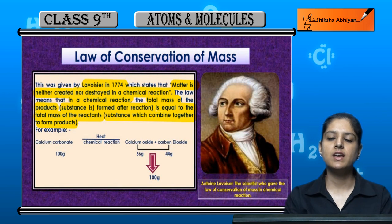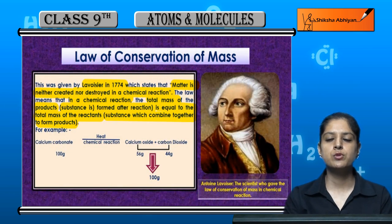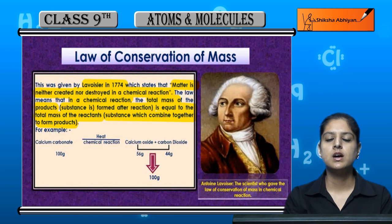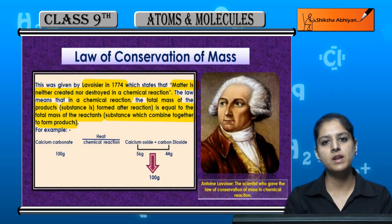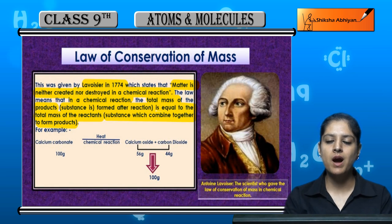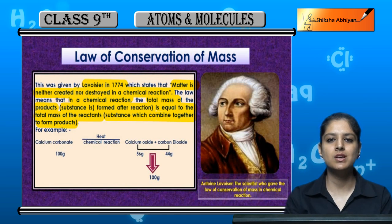So this law says that the reactants and products — the things that react and the things that are created — both have a total mass that is always equal.